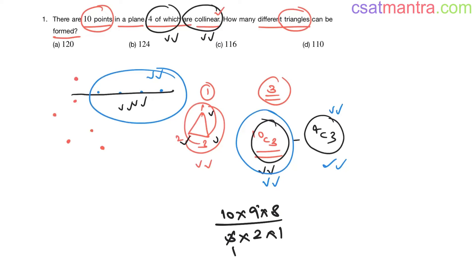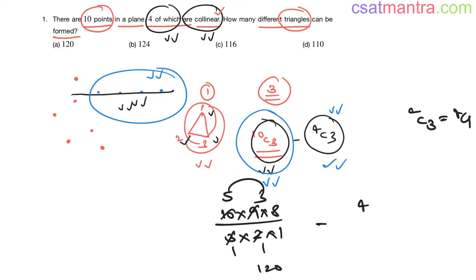10C3 equals (10 × 9 × 8) / (3 × 2 × 1) = 120. Minus 4C3, which equals 4C1 = 4. So 120 minus 4 equals 116. Our answer is 116.